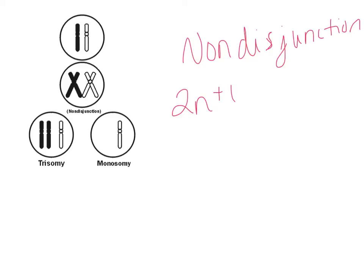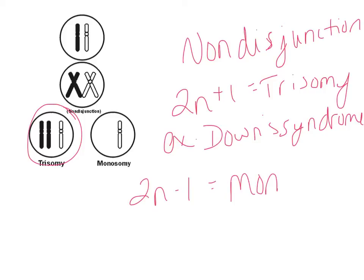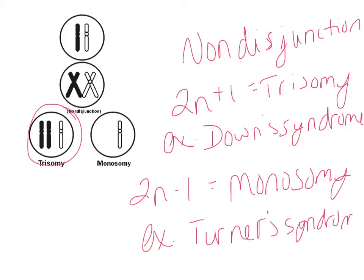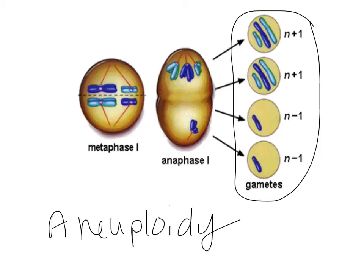Non-disjunction can result in either a diploid plus one — a trisomy, with an extra copy of a chromosome, an example being Down syndrome — or a diploid minus one, which would be monosomy. An example of monosomy is Turner syndrome, which happens in females: instead of having two X chromosomes, they only have one. This can also be called aneuploidy. If the gamete survives and is fertilized, you end up with a fertilized zygote that doesn't have the proper number of chromosomes, which can often be fatal.